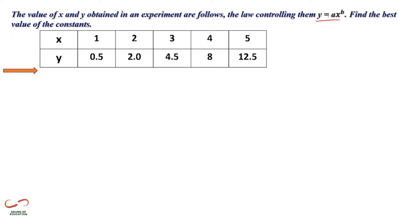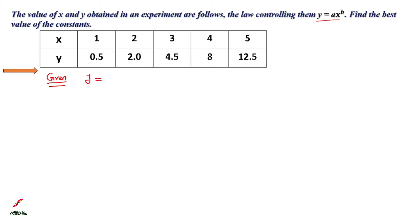The equation given is y is equal to ax raised to b, and we have to find out the values of the constants. Writing down the given data: the equation is y is equal to ax raised to b. The number of sample points n is also given — counting the values, there are 5 total, so n is equal to 5.